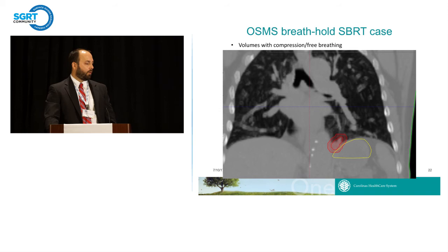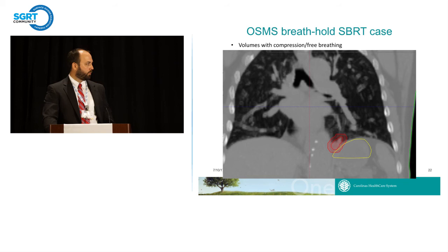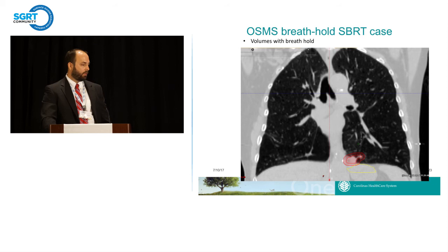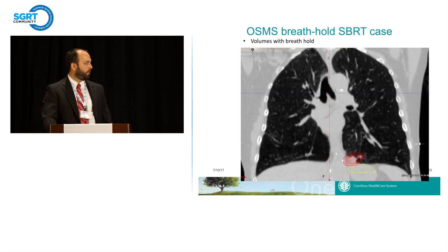The overlap with the stomach was going to be much greater with free breathing compression. In fact, the compression plate was actually pushing not the upper part of the stomach but the medial part of the stomach towards the target. Comparing that to the volumes with breath hold: the volume itself was not dramatically smaller, but the reduction was key — the superior-inferior expansion needed was much less, resulting in much less stomach overlap and significantly reduced dose to the stomach.